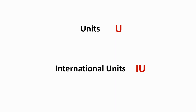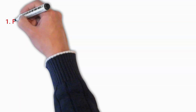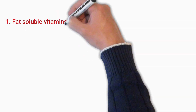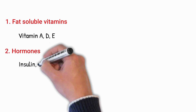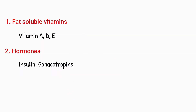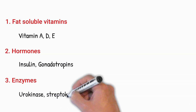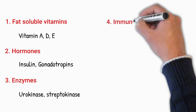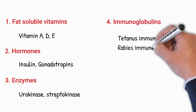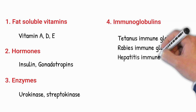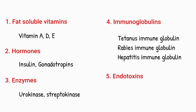Another way of expressing a measured quantity of a substance is in terms of units or international units. This is generally employed for fat-soluble vitamins like vitamin A, vitamin D and E; for hormones like insulin, gonadotropins, etc.; for enzymes like urokinase, streptokinase, etc.; for immunoglobulins like tetanus immune globulin, anti-rabies immune globulin, hepatitis immune globulin, etc.; and certain endotoxins.